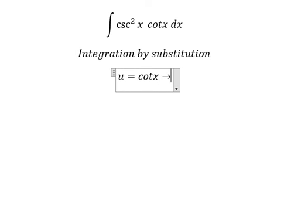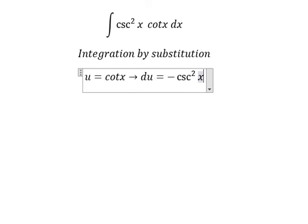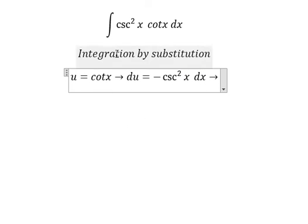If I take the first derivative for both sides, we have du equal to negative cosecant squared x dx. Because we don't have the negative sign in the original integral, we put the negative next to the u.